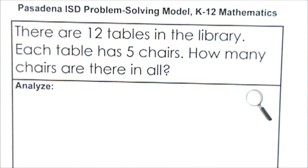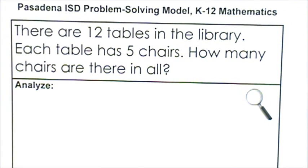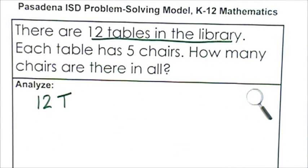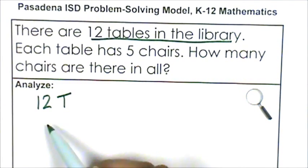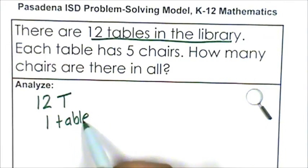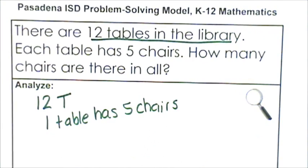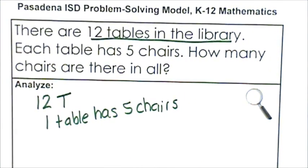First, I'm going to analyze the problem. After reading the problem and visualizing and making a movie in my mind about what's happening in the story, what information do I know? Well, I know that there are 12 tables in the library, and each table has five chairs. So that means one table has five chairs — every table has five chairs.